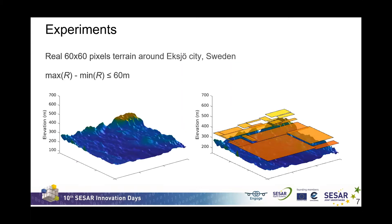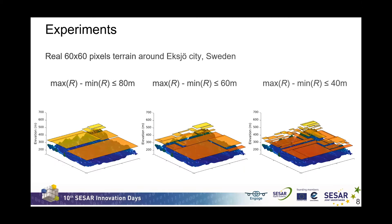We implemented the integer program and ran it on a real 60 by 60 pixel terrain around Esker city in Sweden. We set the maximum height difference to 60 meters and obtained the partition shown on the right. We also experimented with other values of the height difference — as expected, when we allow higher height differences within a rectangle, fewer rectangles are needed.